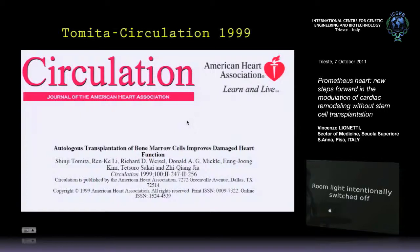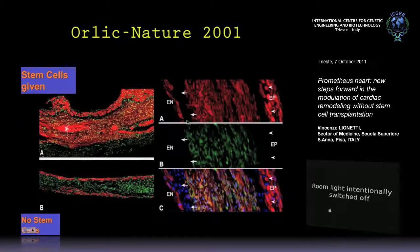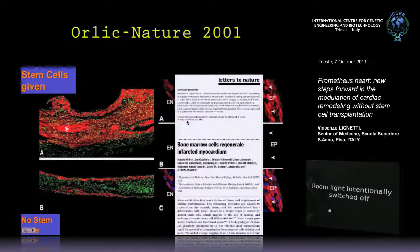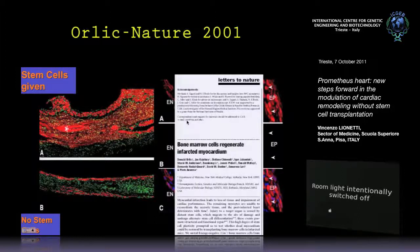Tomita showed this. After that, Orlik published the same things in mice but in Nature. He used autologous transplantation of bone marrow cells with a different technique — marking stem cells with green fluorescent protein, so you can see the effect described by Tomita before. The model was different — cardiac injury evoked not by cryo-injury but by ligation of the coronary. But there is always a necrotic tissue in both Tomita and Orlik.